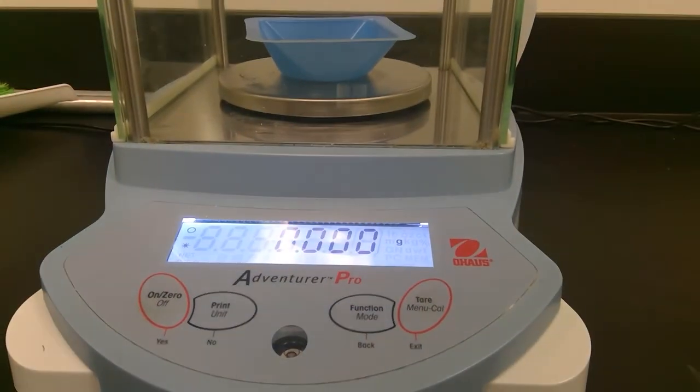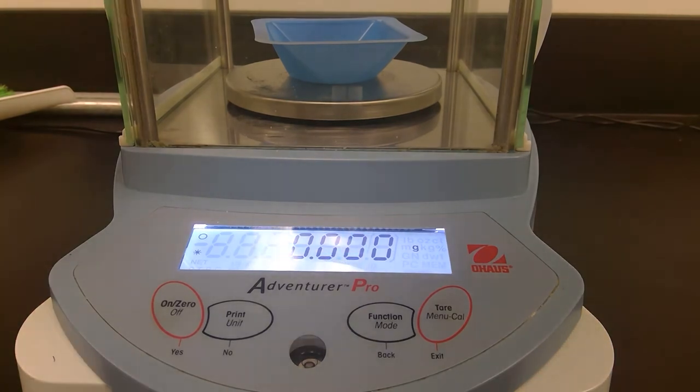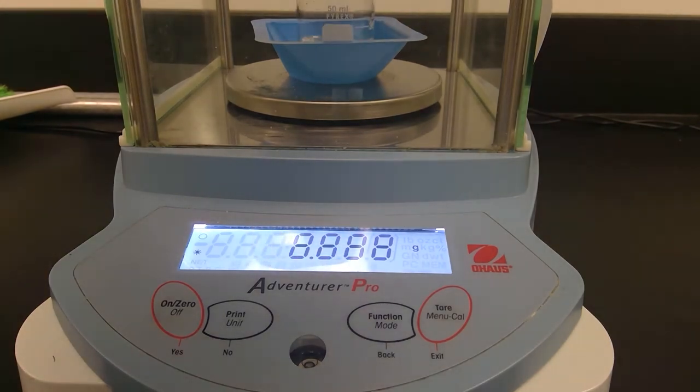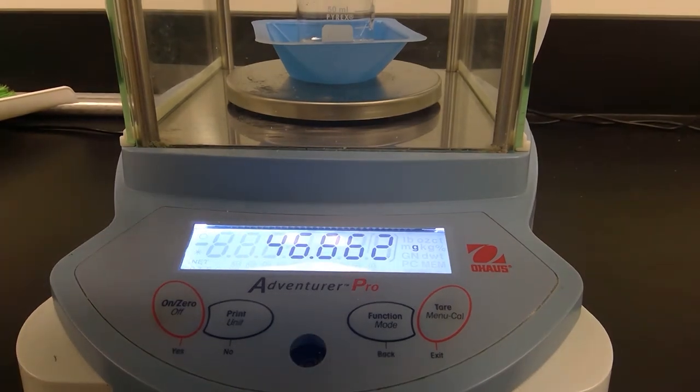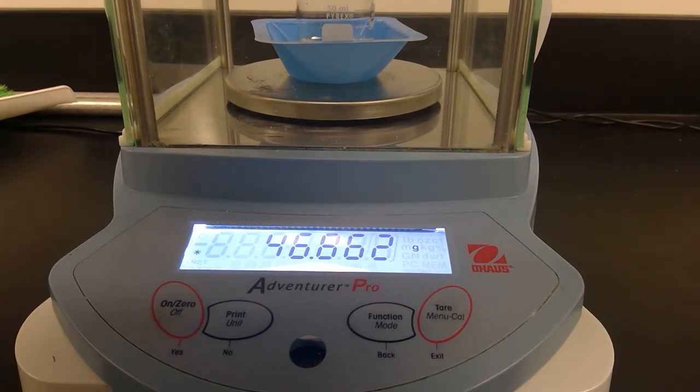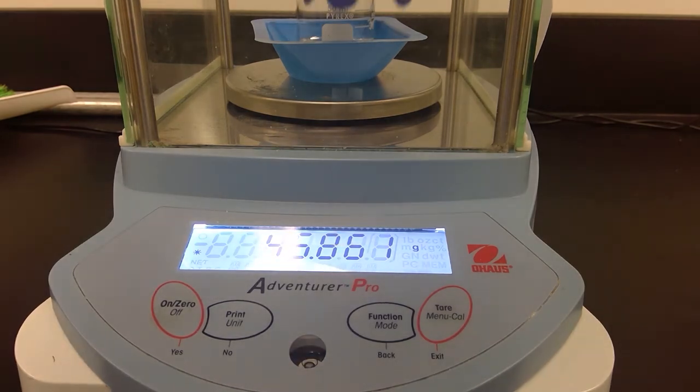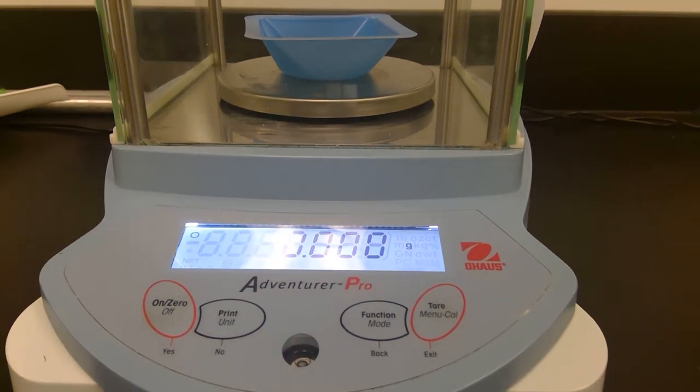Then we will go and weigh our beaker again for our fourth data point. Make sure it's tared. Record the mass of your beaker. Now we will go get our final data point.